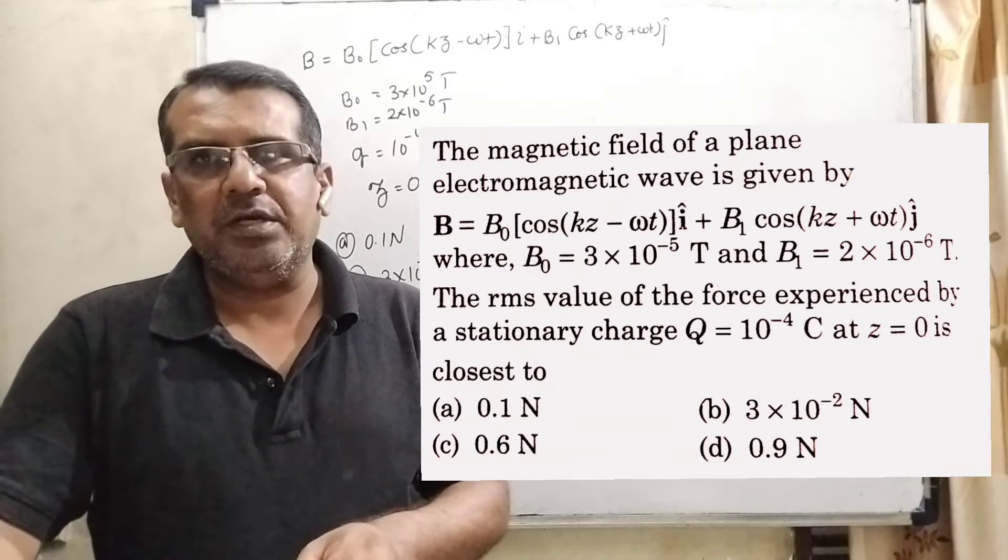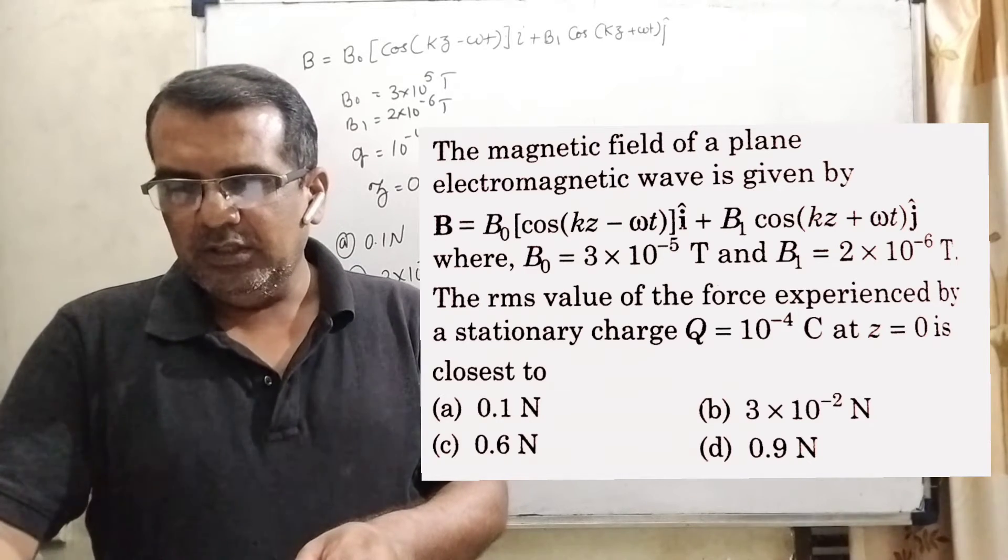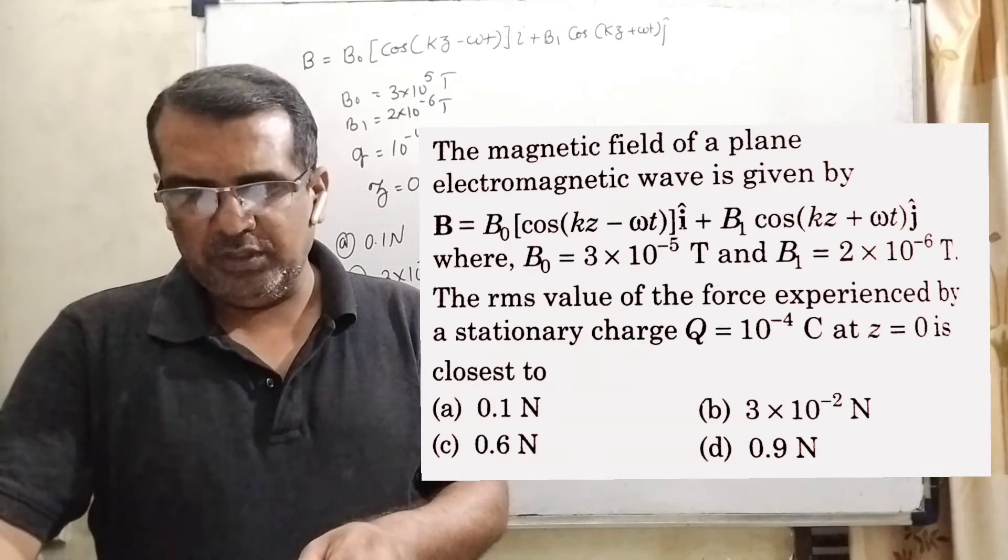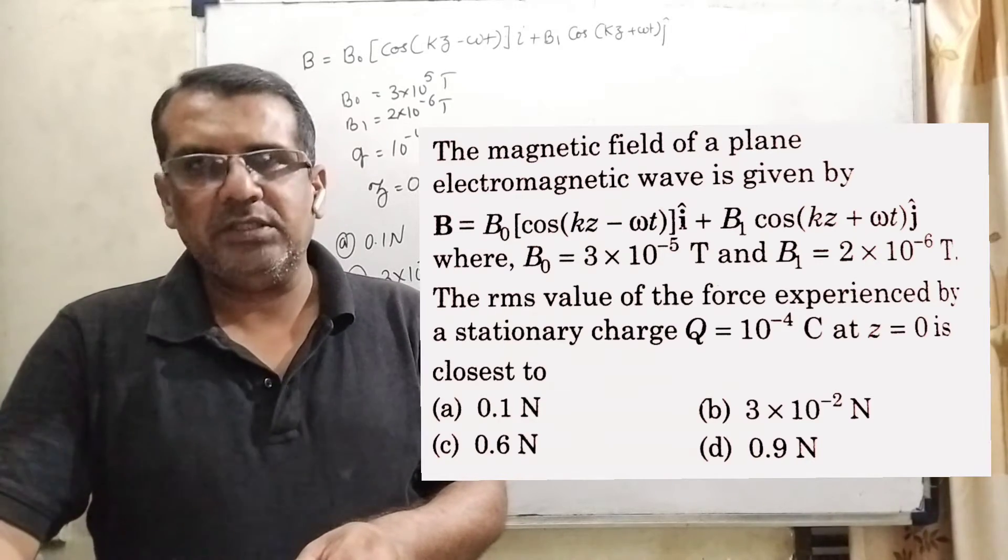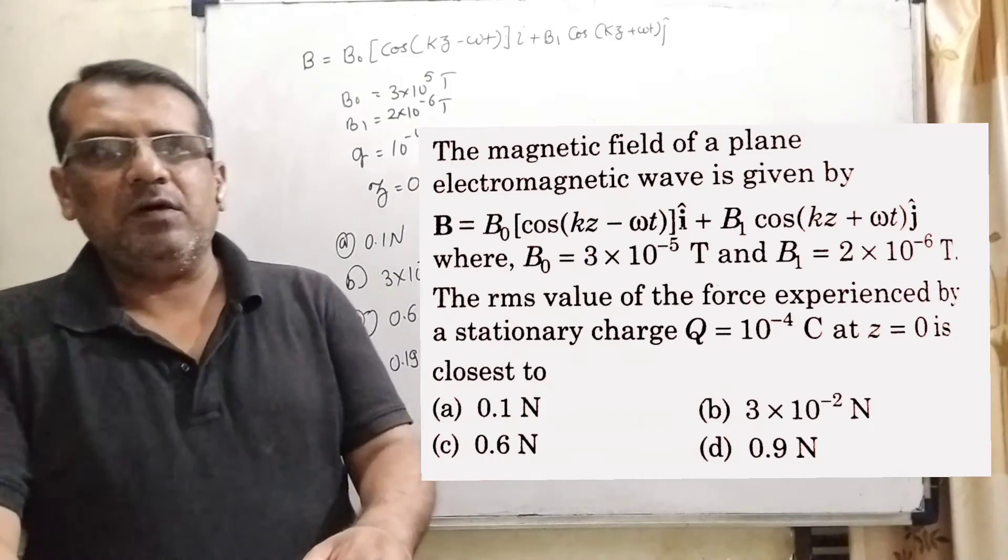Option C, 0.6 newton. Option D, 0.9 newton. And this question is asked in JEE 2019.